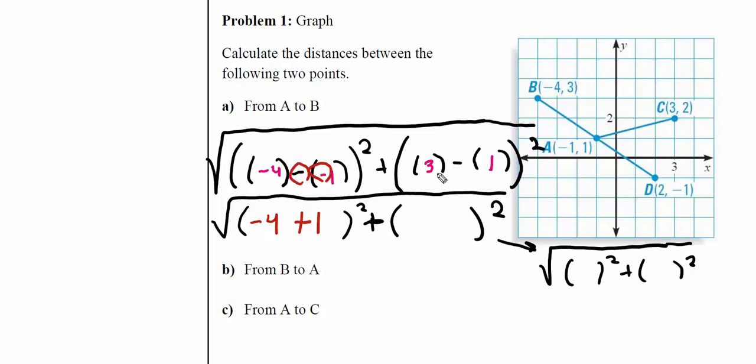Doing the algebra: negative four comes down, minus a negative makes a positive one. This is three minus one. Negative four plus one is negative three, three minus one is two. Because this is squared, it takes care of negatives.